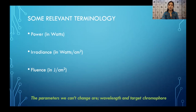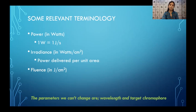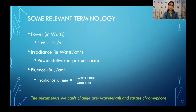Some terminologies commonly associated with the laser are important to understand. Power is measured in watts and is calculated as the amount of energy delivered within a second. Irradiance is the power delivered per unit area — that is, how much tissue is going to be ablated. Fluence is the amount of tissue ablated during a particular pulse of time, and it is one of the most important parameters of the laser, determining the extent of cutting or ablation as well as the extent of thermal damage that can occur.